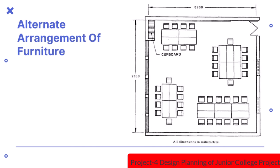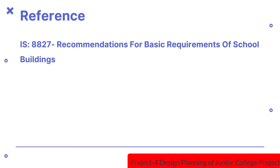This is a sketch showing alternate arrangements of furniture in secondary or higher secondary classrooms. The reference used for this video is IS 8827, which is Recommendations for Basic Requirements of School Buildings.